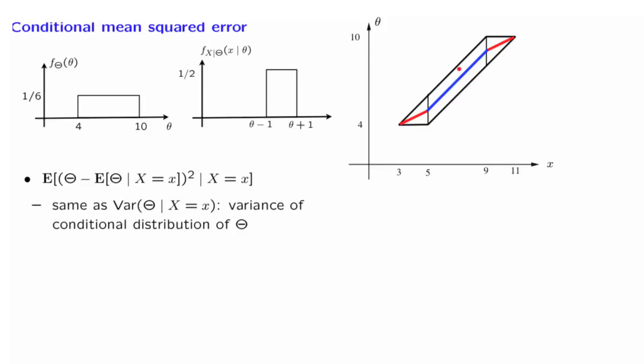As we have discussed, if I tell you that x takes on this particular value, theta is uniform on this interval. Therefore, the conditional variance of theta is the variance of a uniform on an interval of this particular length.